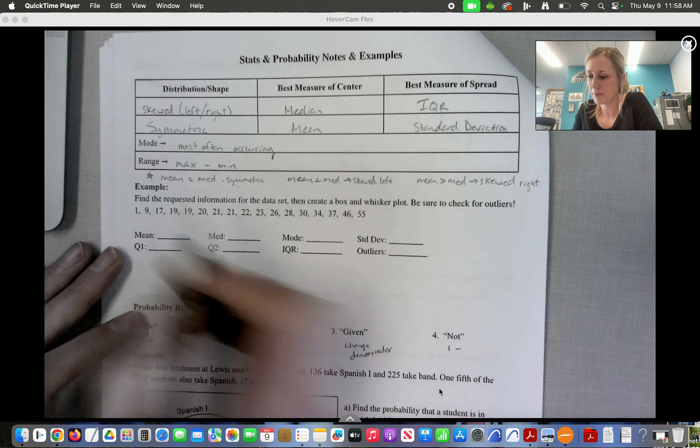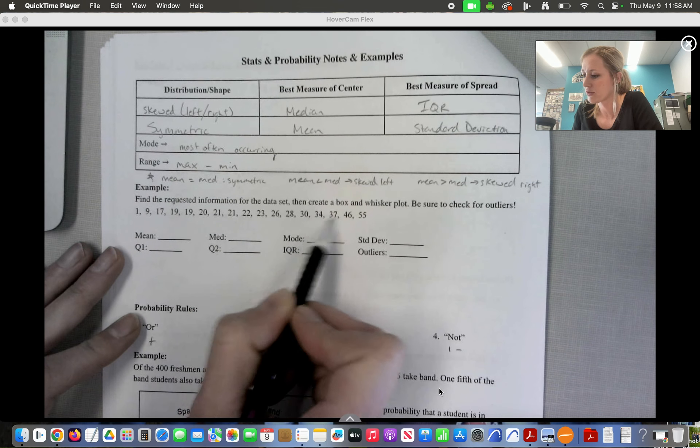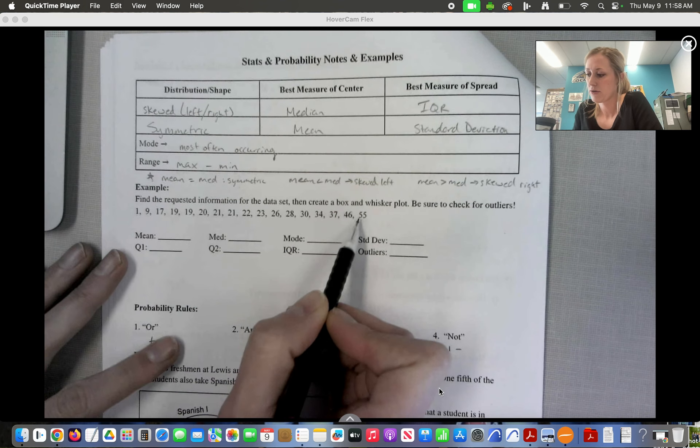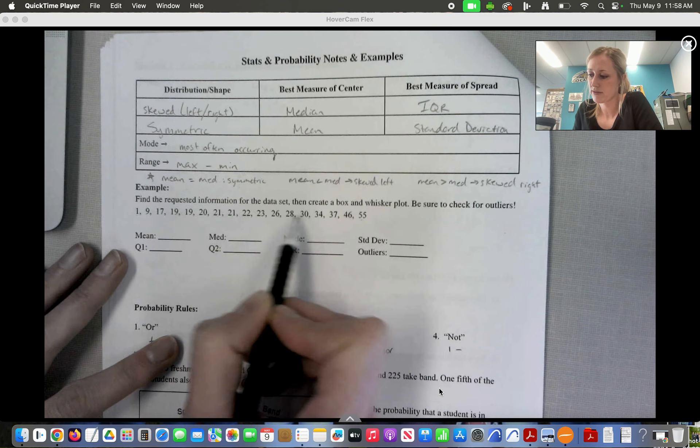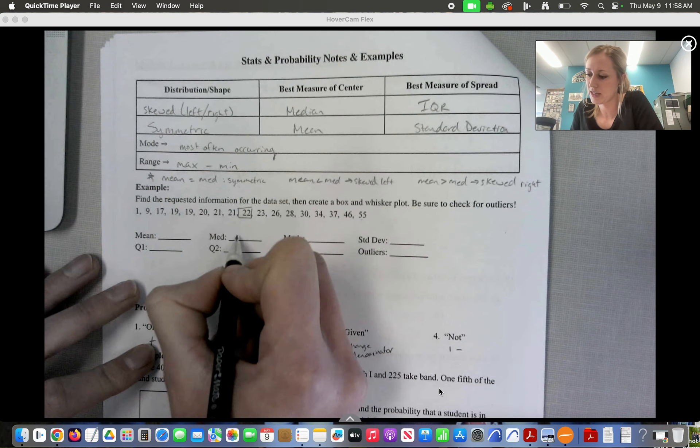Counting: 1, 2, 3, 4, 5, 6, 7, 8, 9, 10, 11, 12, 13, 14, 15, 16, 17. So if I come in 8 on each side, 1, 2, 3, 4, 5, 6, 7, 8, then this is my middle number. So our median is 22.